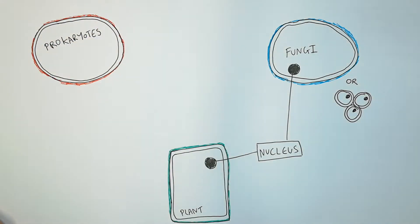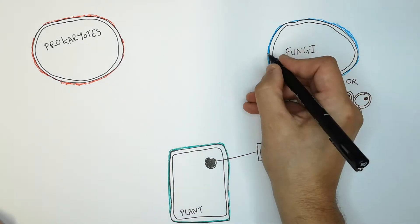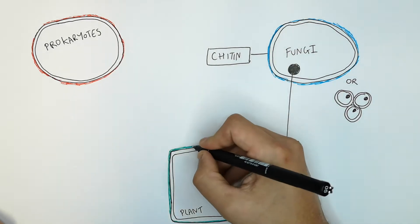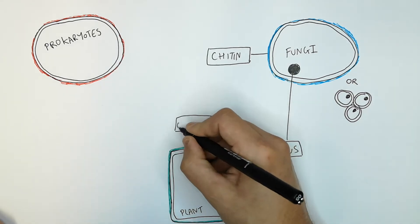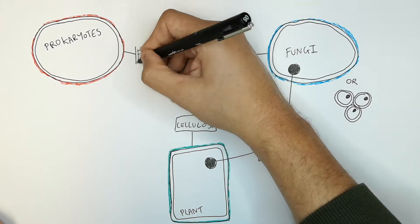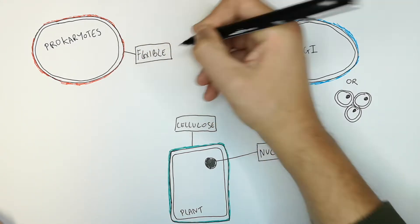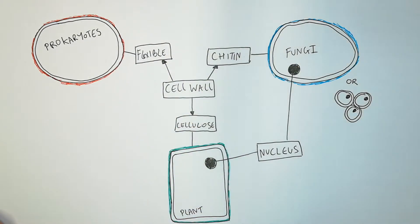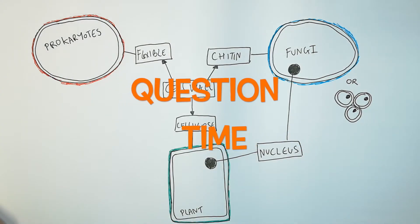However, the cell walls of these three kingdoms are all made of different molecules. Fungi cells have a cell wall made of chitin. Plants have a cell wall made of cellulose. Prokaryotes have a flexible cell wall. So prokaryotes, fungi, and plants all have a cell wall made of different materials — you have to know the difference.